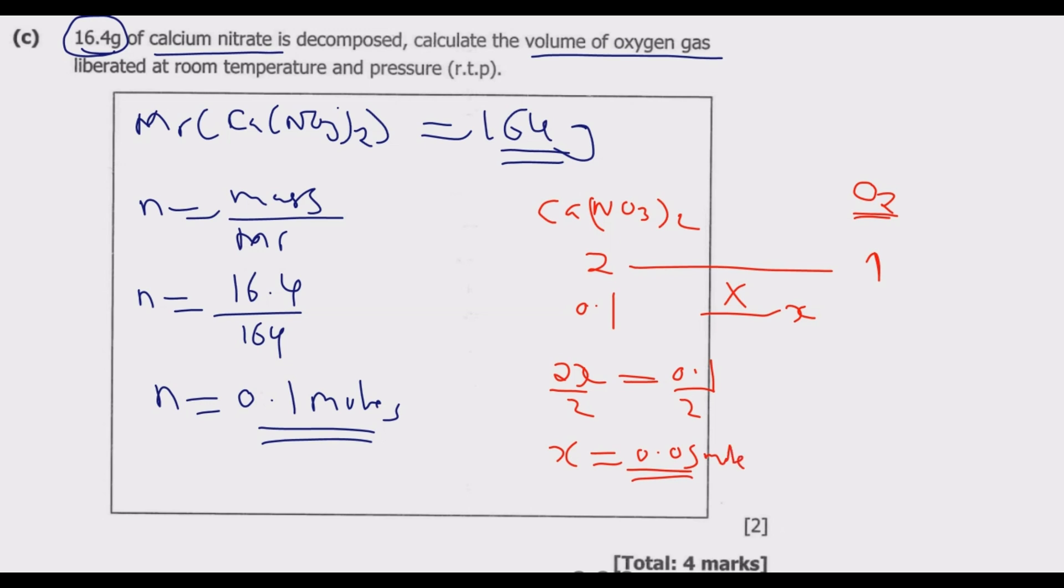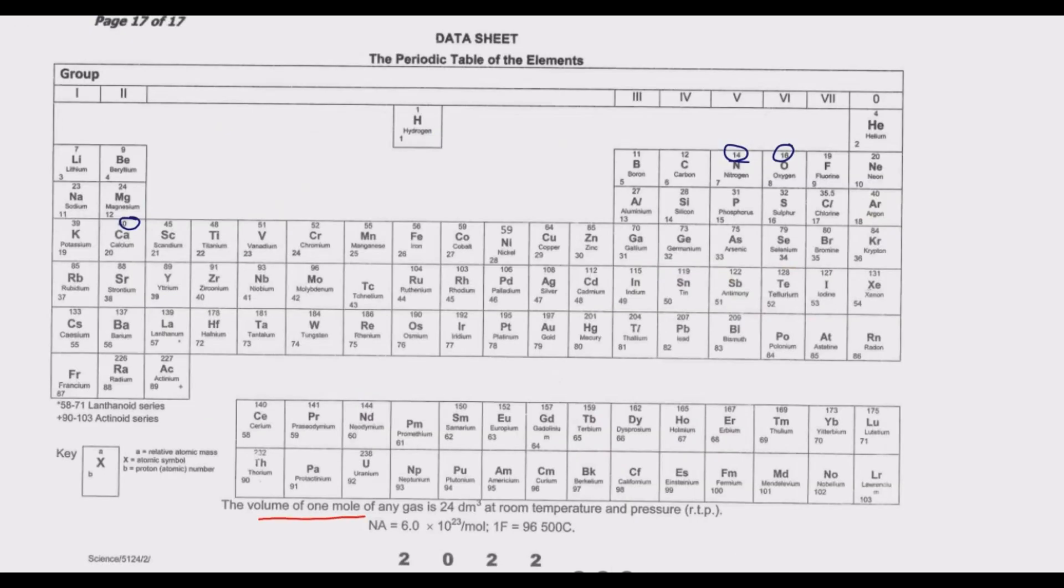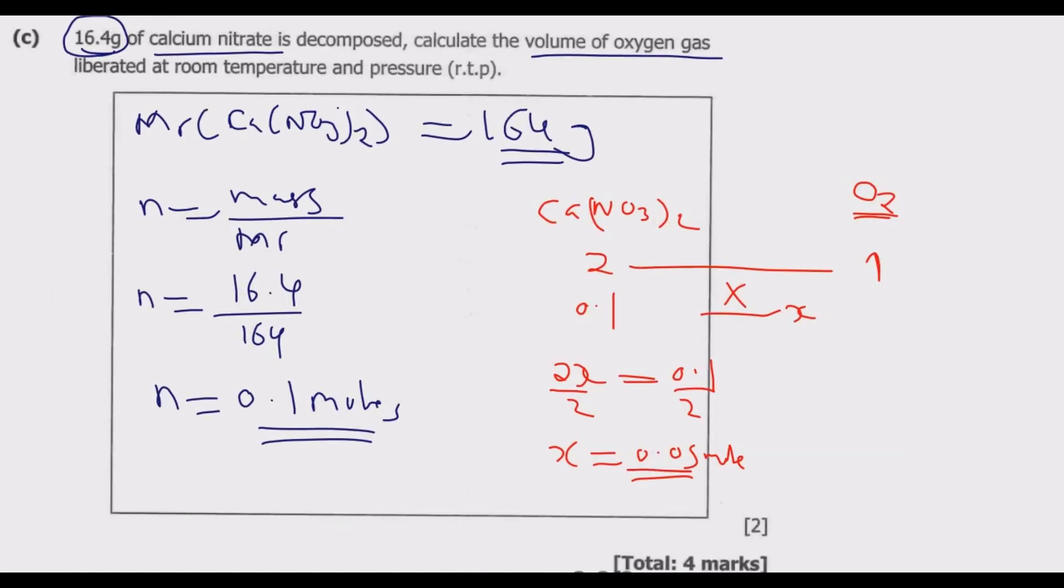Then we use this to go to the periodic table and check this. The volume of 1 mole is equal to 24 decimeter cubic. Based on that we know now that 1 mole gives us 24 decimeter cubic of any gas. Then if we have 0.05 moles what can we get? Then we cross multiply at this point. So 1 times x is x, is equal to 24 times 0.05. So x is equal to 1.2 decimeter cubic as the answer.